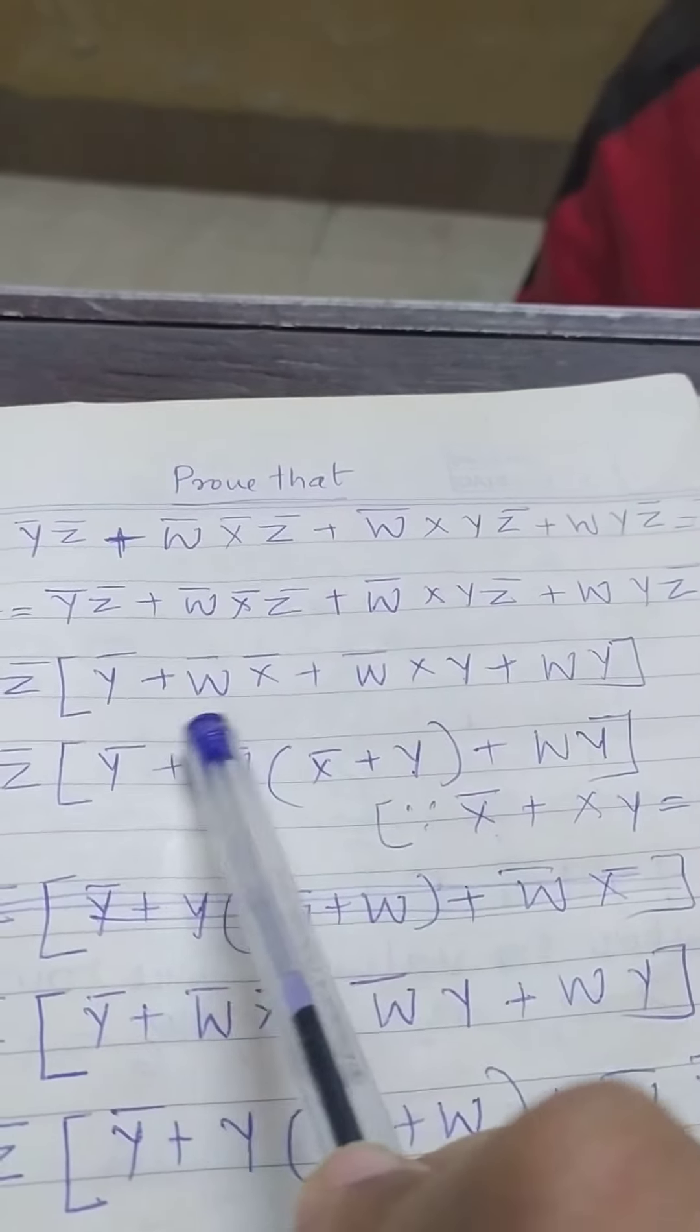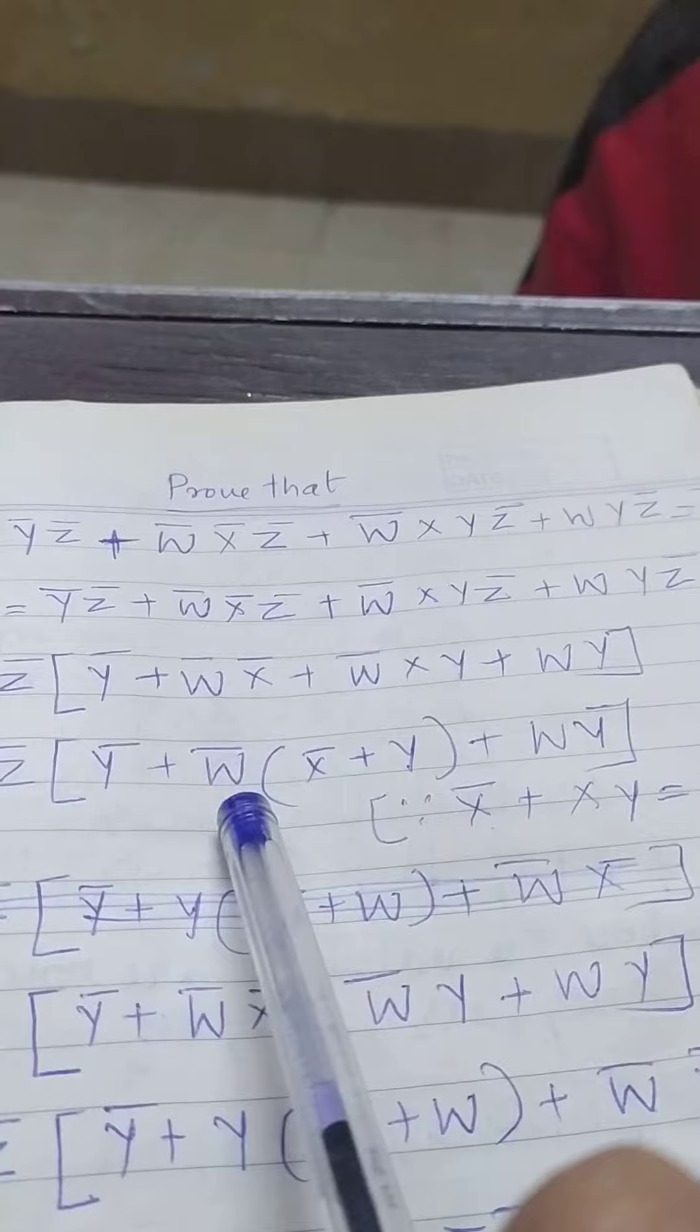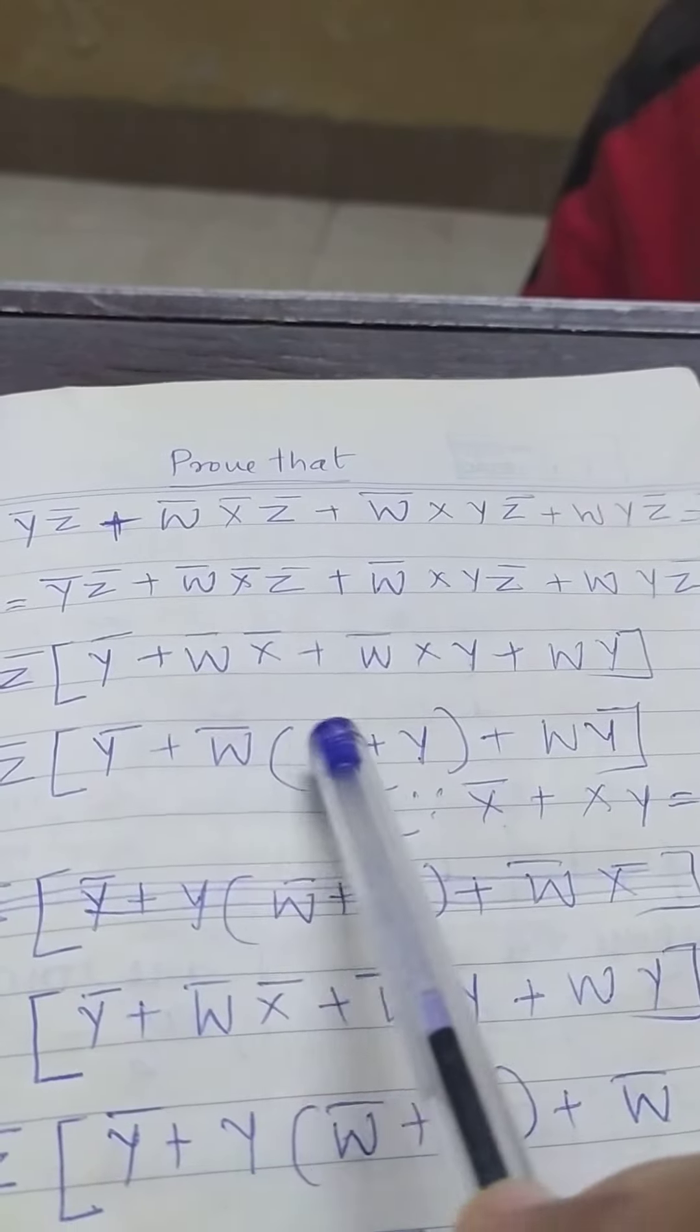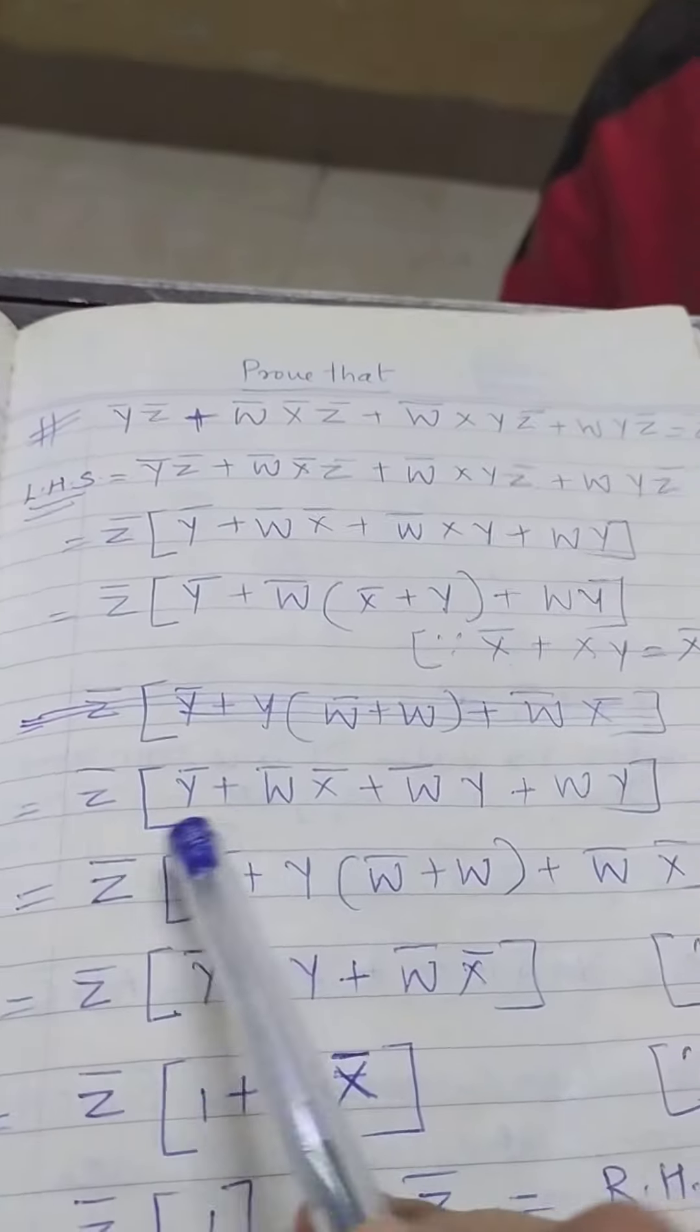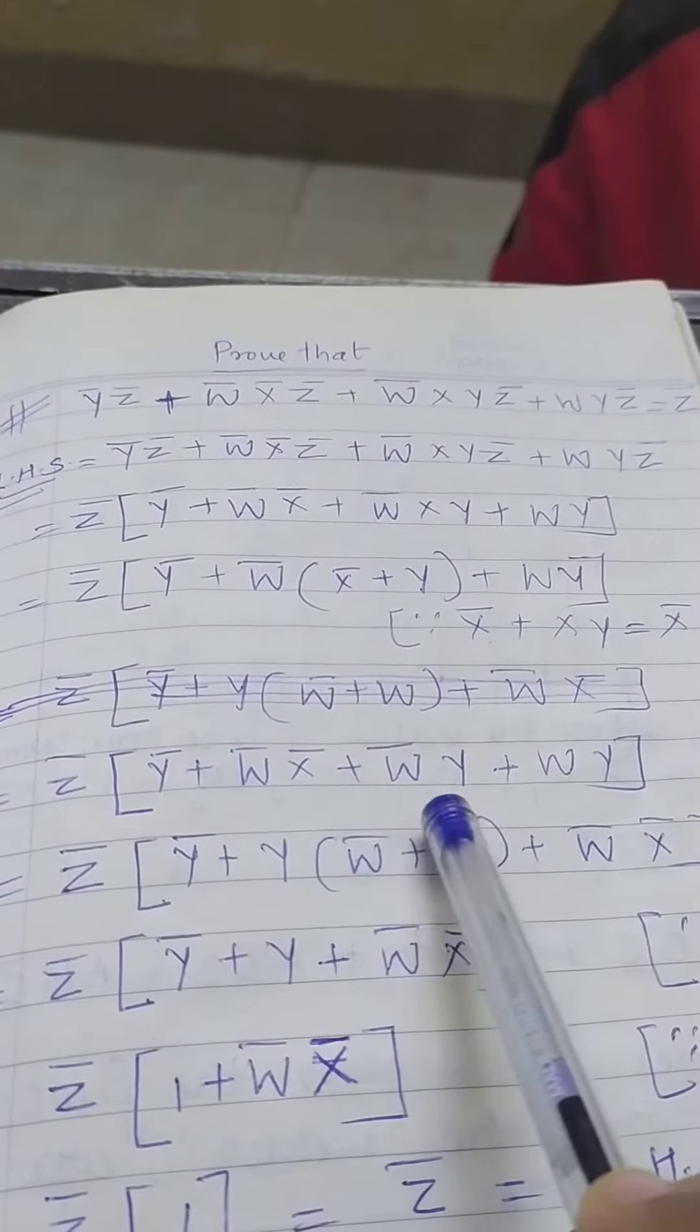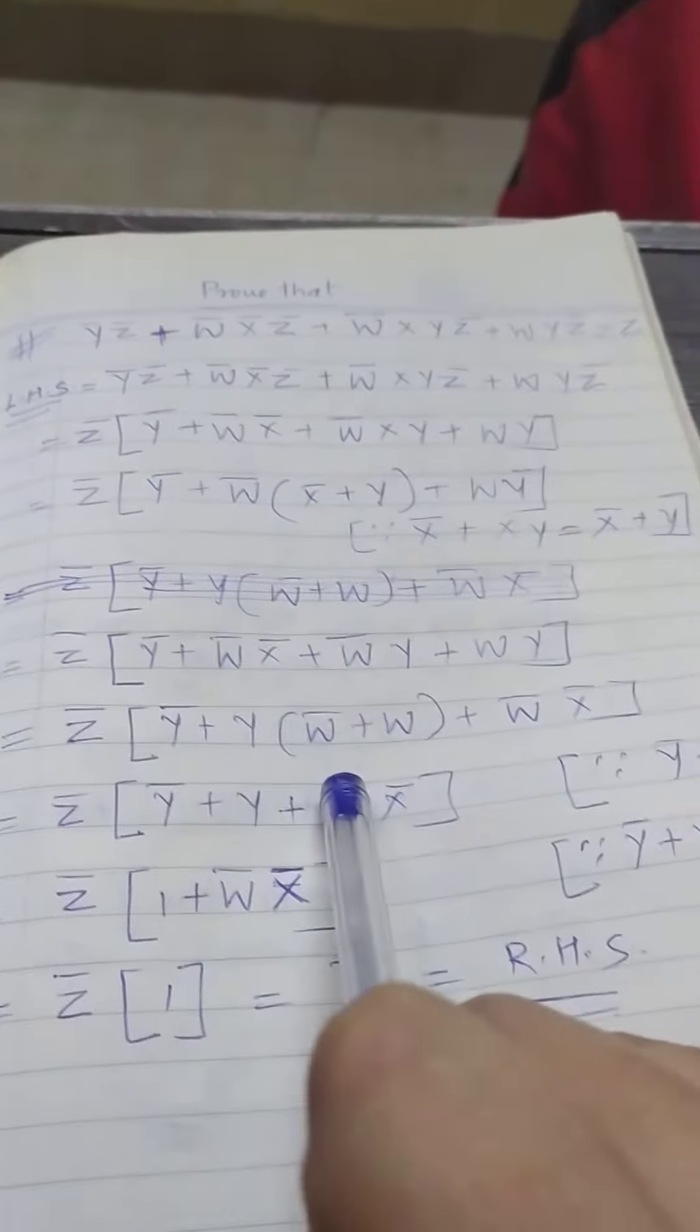These two are common, so we will take w̅, x̅ plus y and then z̅, y̅ plus wx̅, wy̅. So these two are common.